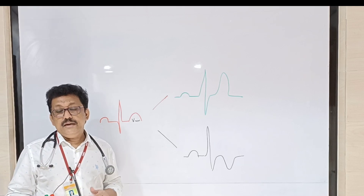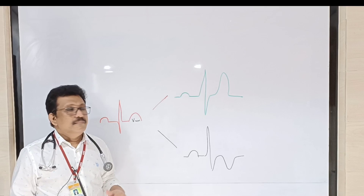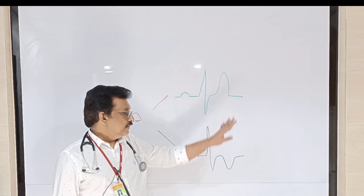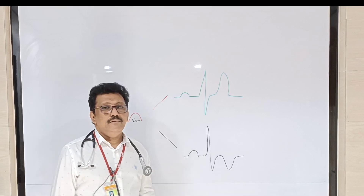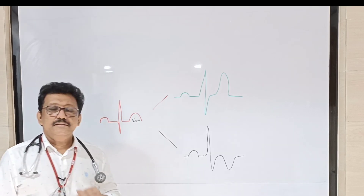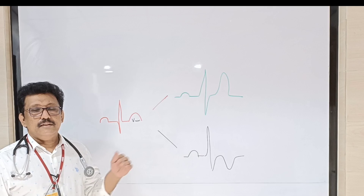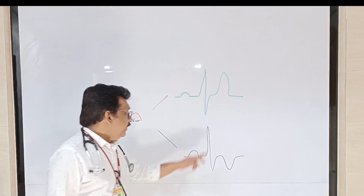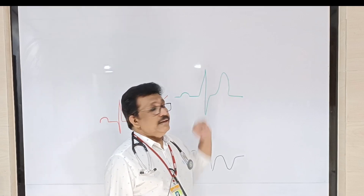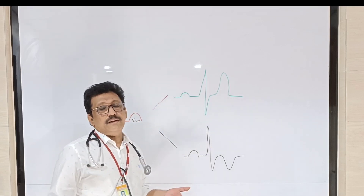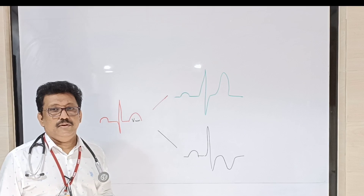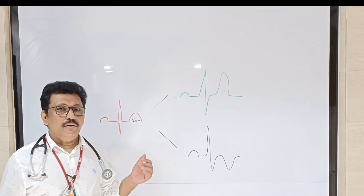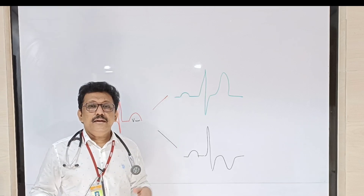In most leads of the ECG you get a normal T wave which is upright but not very tall. However, in some conditions you can get very tall T waves, and in some conditions you can get negative T waves. Here you can see the T wave is very tall — sometimes more than 10 small squares. There is a criteria but it is not well accepted, so we will not put any specific criteria.